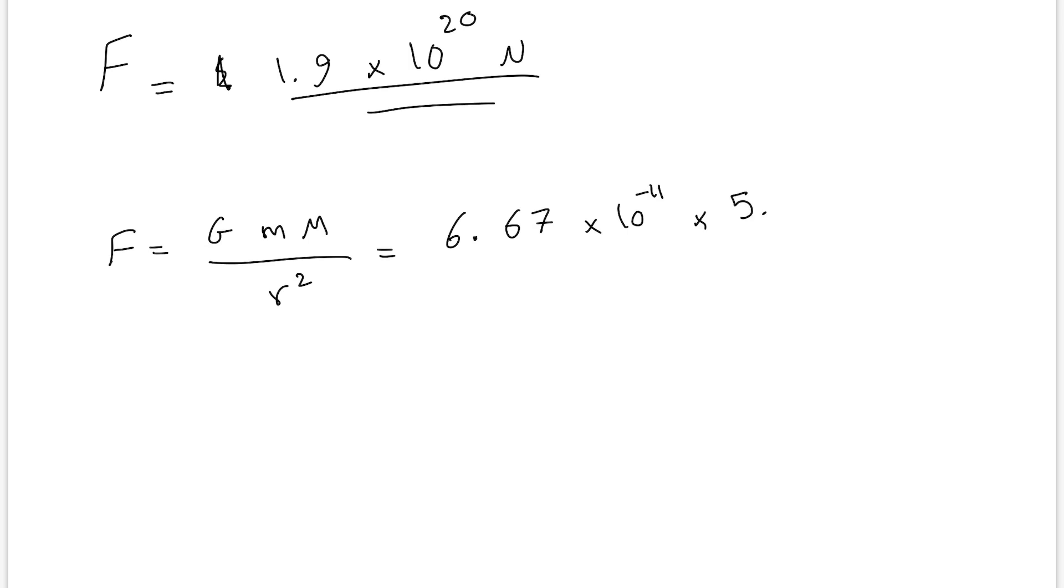which is 5.97 times 10 to the 24, and the mass of Sun, which is 1.99 times 10 to the 30. This is divided by the distance between Sun and Earth, which is 149.6 times 10 to the 9 meters, squared.